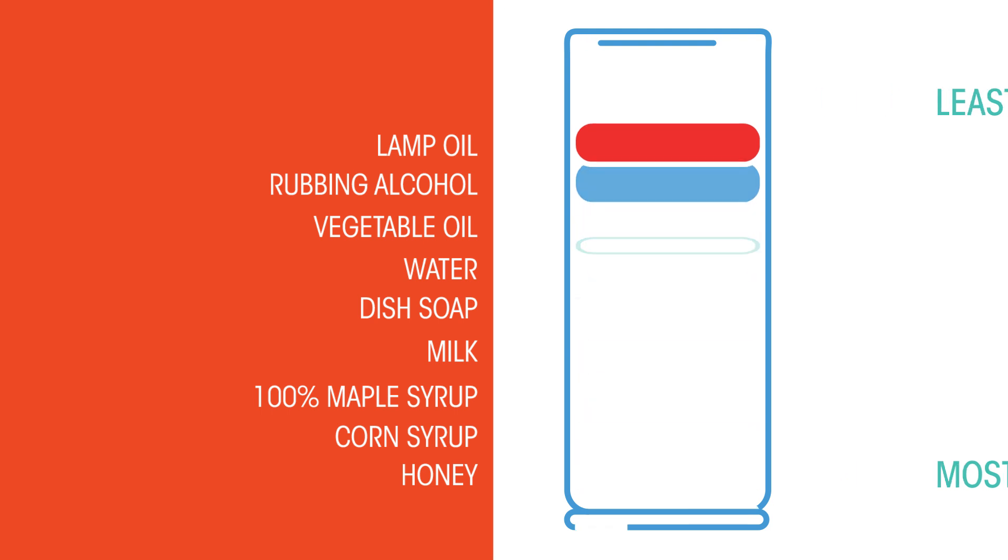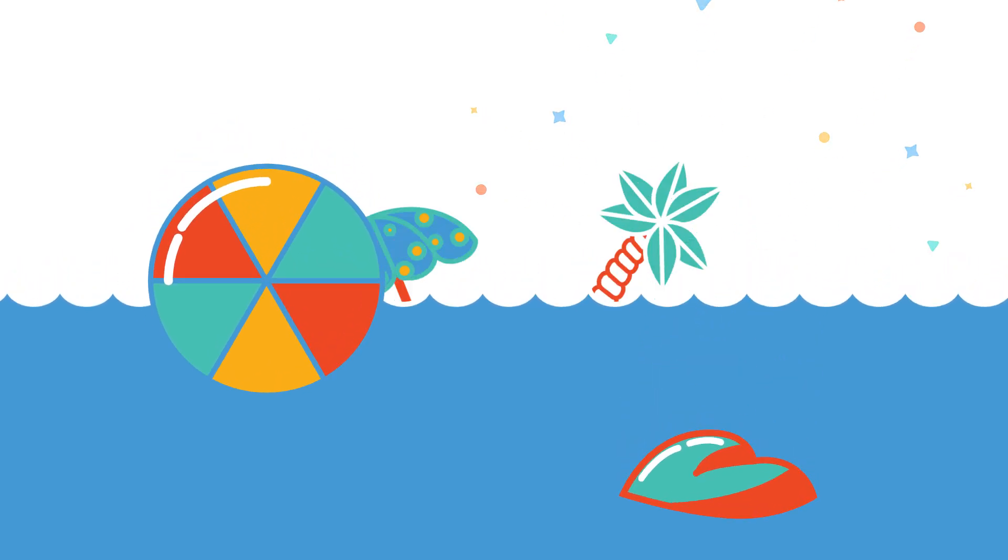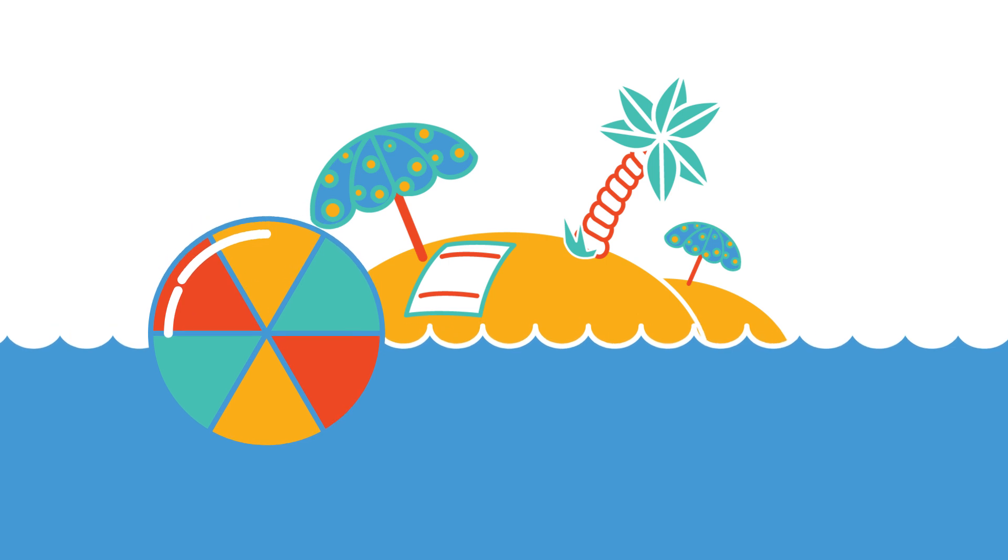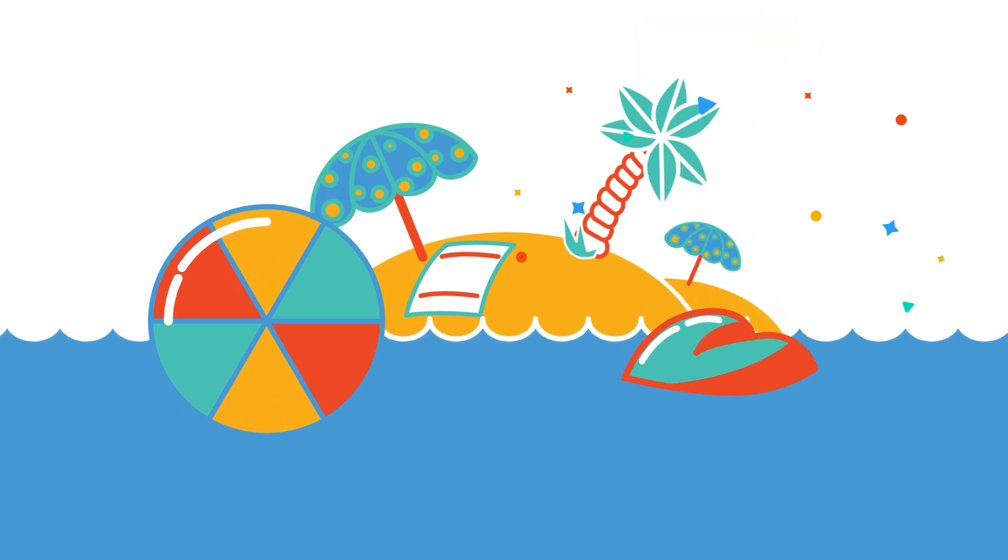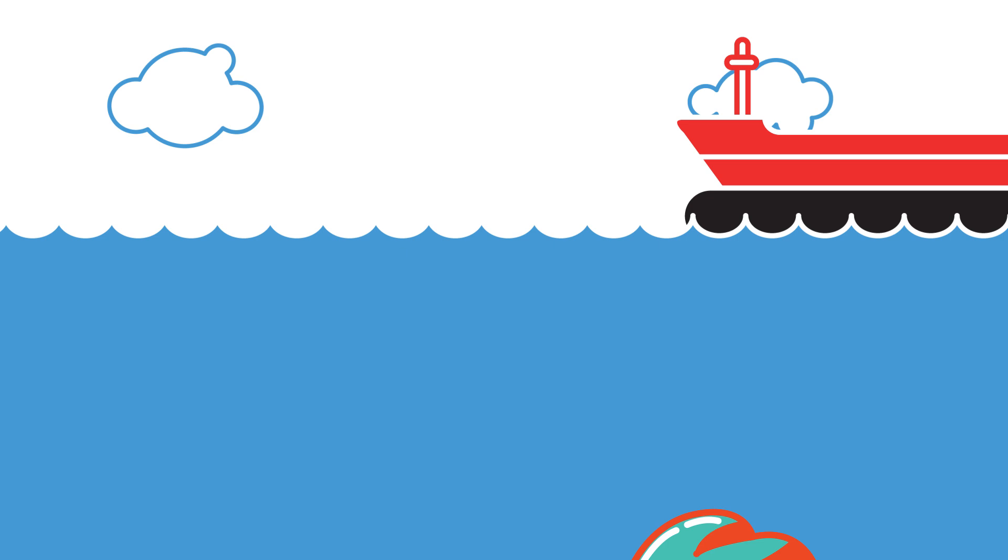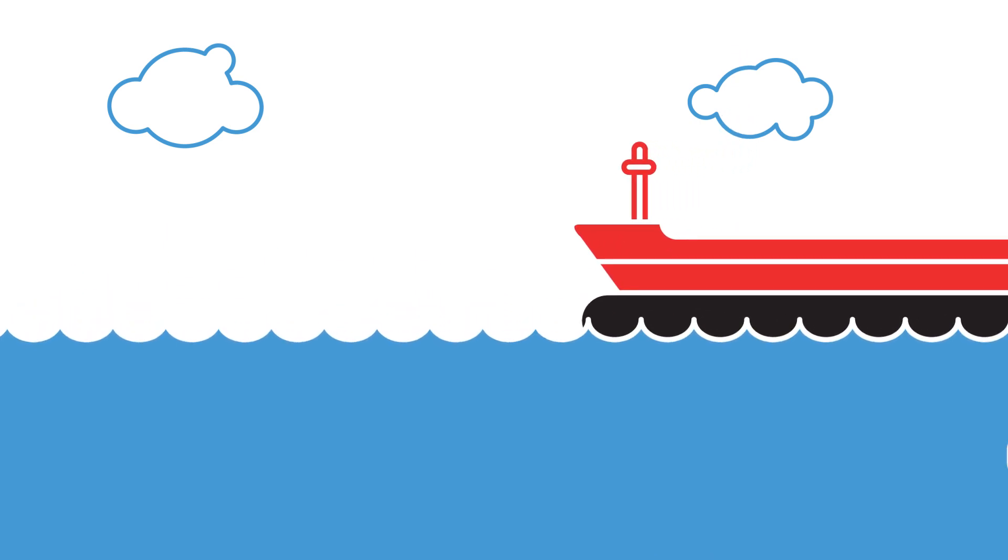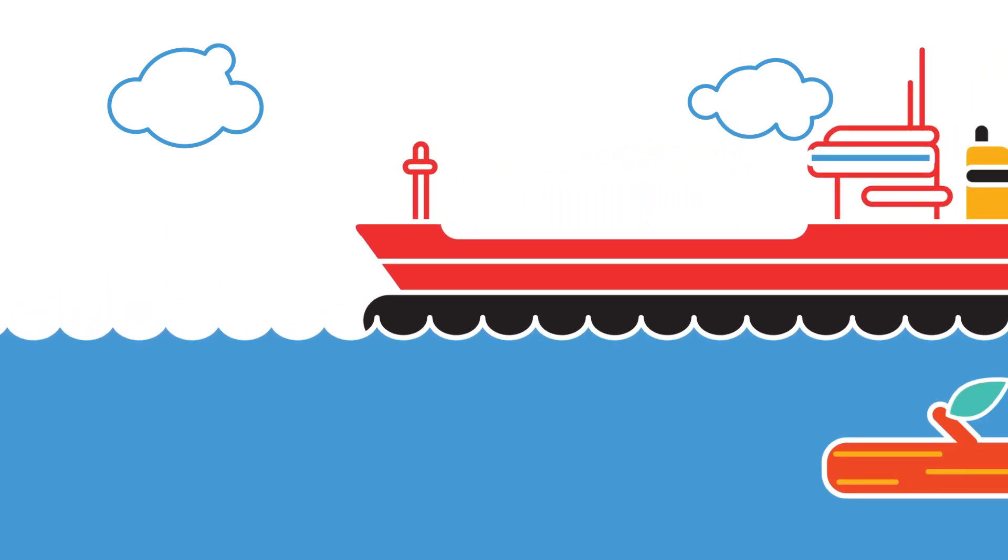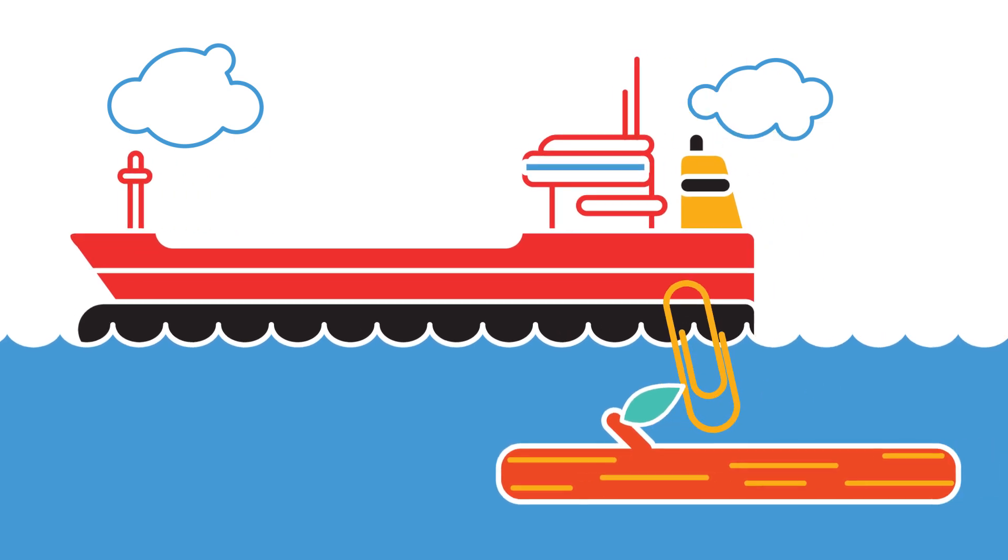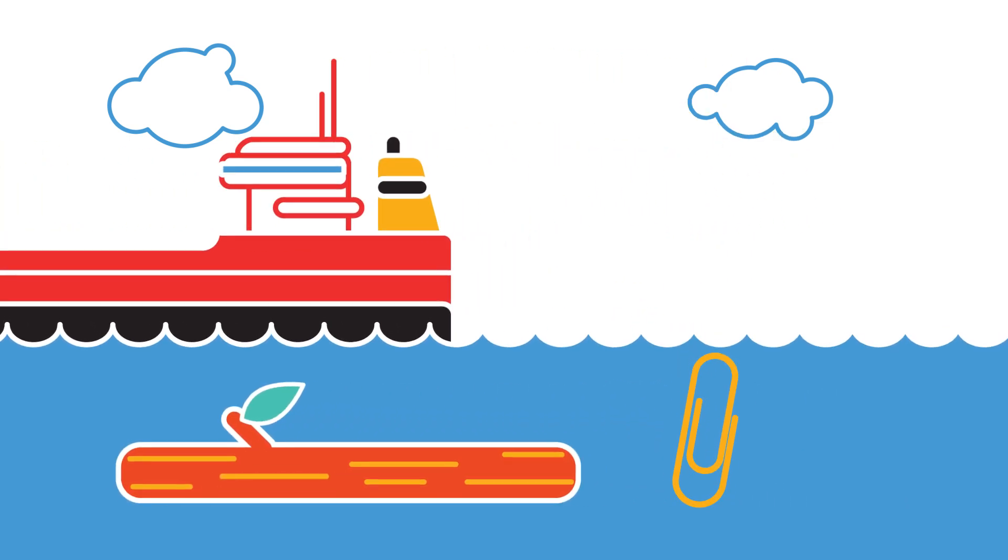But what about the densities between different states? Look at the world around you, think of floating and sinking. When you go to the beach, why does the big beach ball float, whereas the small heavy pebble sinks? Why do huge boats float? How come a heavy wooden log floats on water, but a small light paperclip sinks? This is all to do with density.